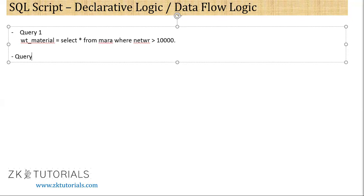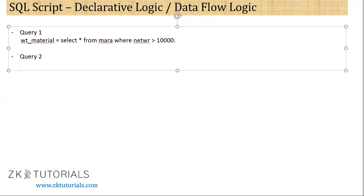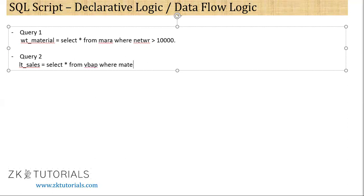That's where I will write my query number 2. What I will write here is — let's say, I will write my sales table. Select star from VBAP. Where material — MATNR — in...